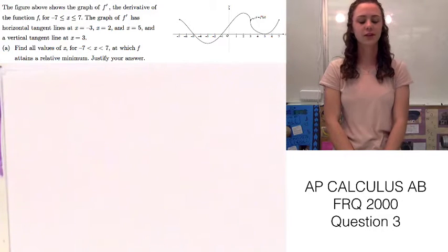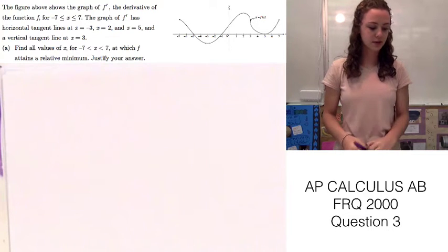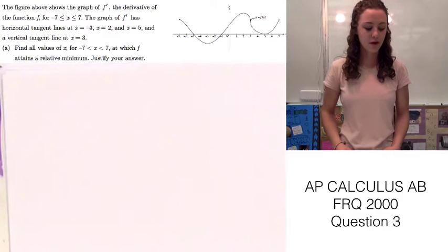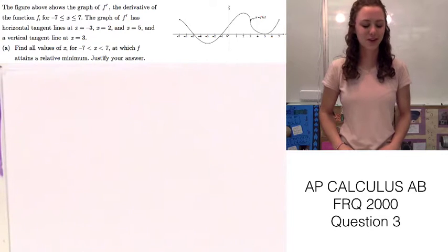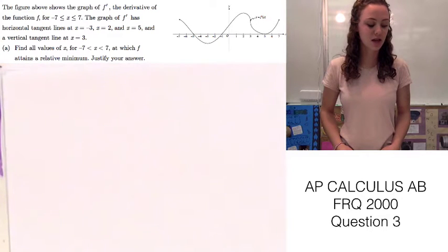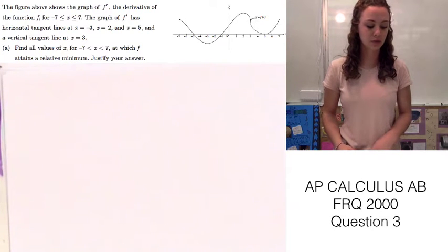I'm going to be doing question number 3 from the 2000 AP Calculus Test. This question says the figure above shows the graph of f prime of x, the derivative of the function f, for the interval negative 7 to 7. The graph of f prime has horizontal tangents at x equals negative 3, x equals 2, and x equals 5, and a vertical tangent at x equals 3.